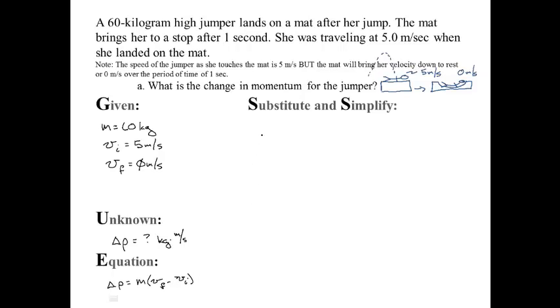So if I replace numbers for letters now, I don't know what change in momentum is but I do know what mass is. It's 60. I do know what velocity final is. It's 0 minus and velocity initial is 5.